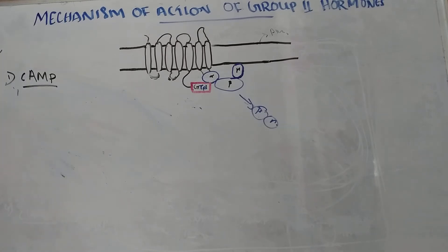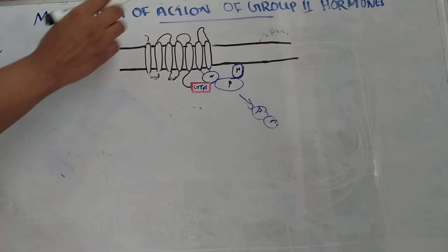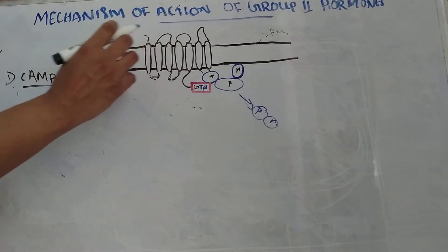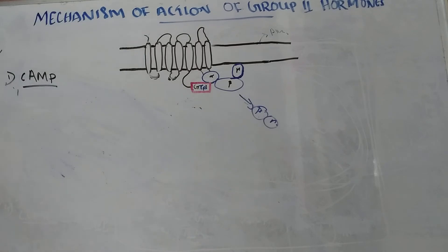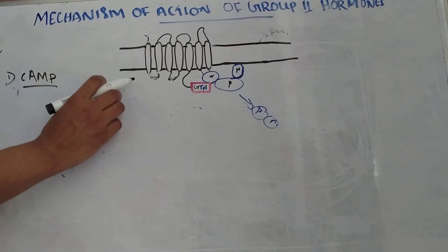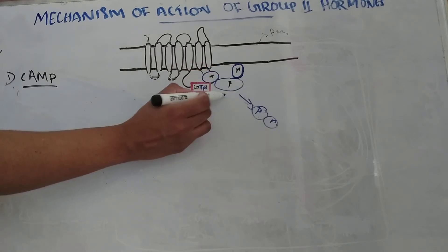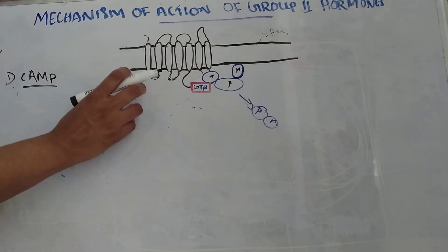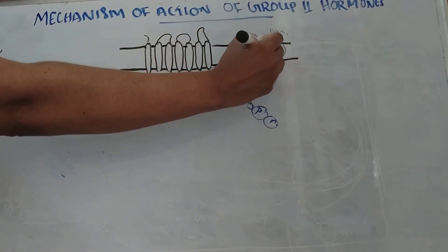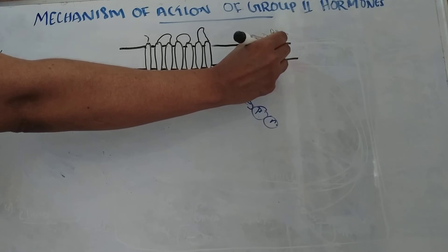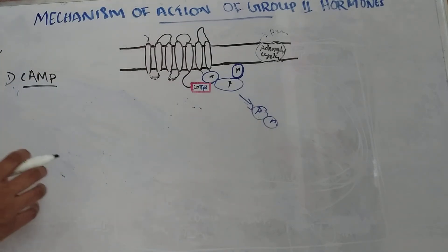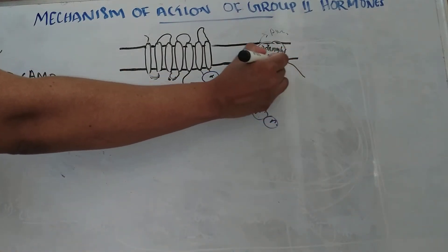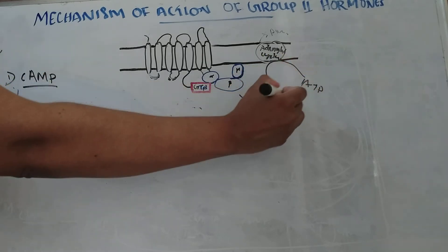The activated G protein — meaning when a hormone binds to the G protein coupled receptor, the G protein is activated and GDP becomes GTP — this activated G protein activates adenylyl cyclase. The beta-gamma subunit is released. Adenylyl cyclase catalyzes the conversion of ATP to cyclic AMP.